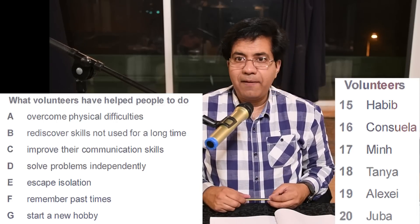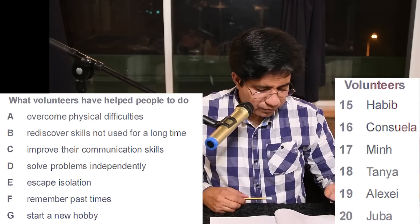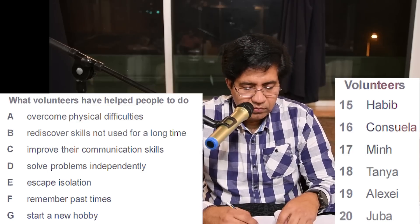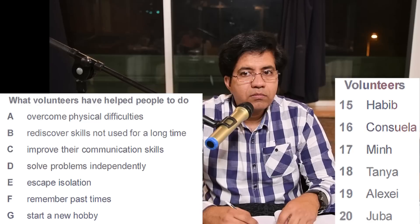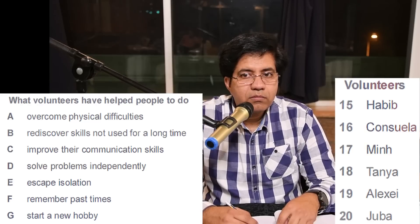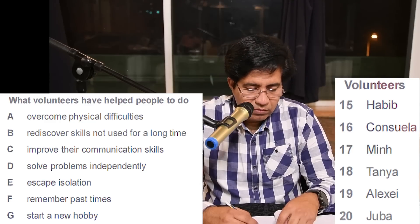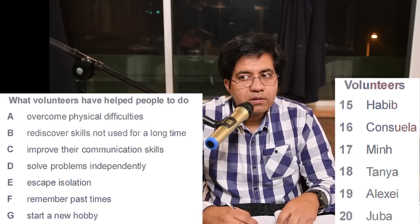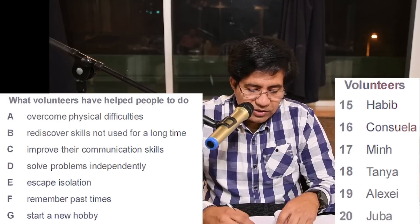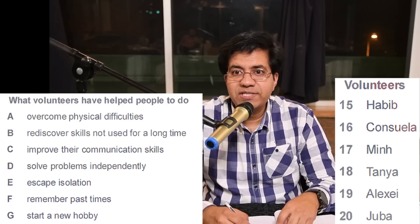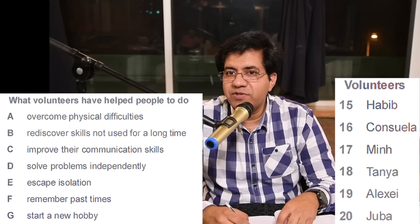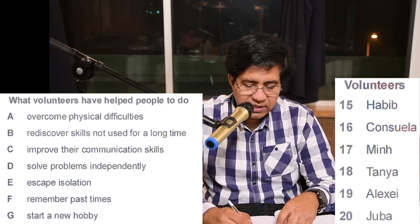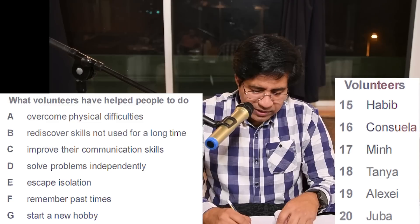Tanya visits an elderly woman once a week. When the woman found out that Tanya is a professional dressmaker, she got interested. Tanya showed her some soft toys she'd made and the woman decided to try it herself — now she really enjoys it and spends hours making toys. So the answer is G — start a new hobby — making soft toys is the new hobby.